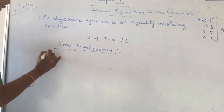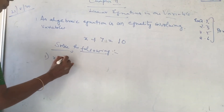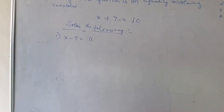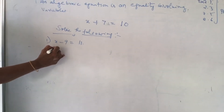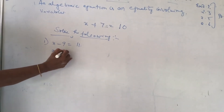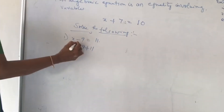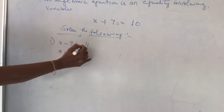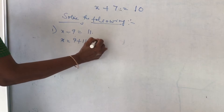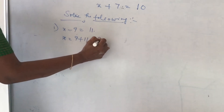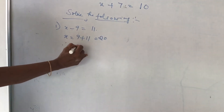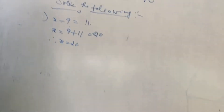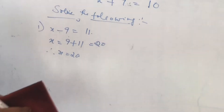First question: x minus 9 is equal to 11. What is the procedure? x stays on the left side, numbers go to the right side. When minus 9 goes to the right, it becomes plus. 9 plus 11 is equal to 20. Therefore, x is equal to 20.